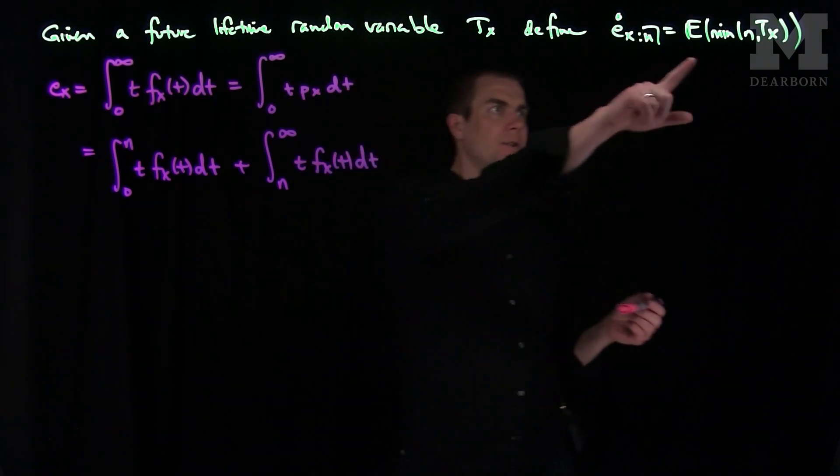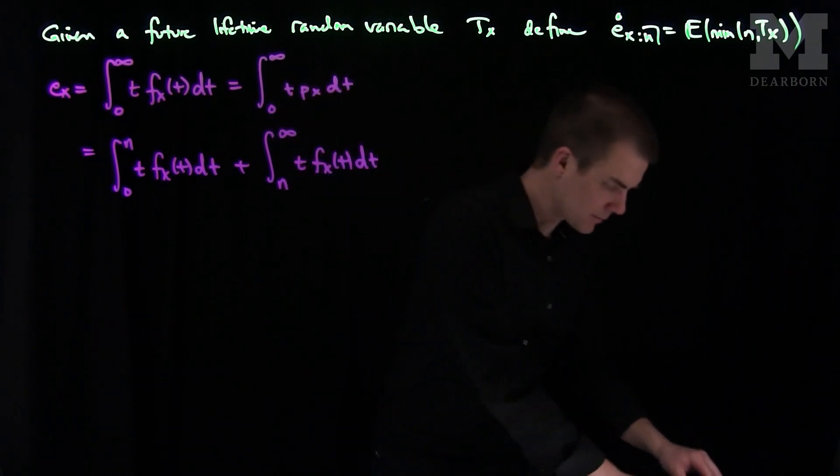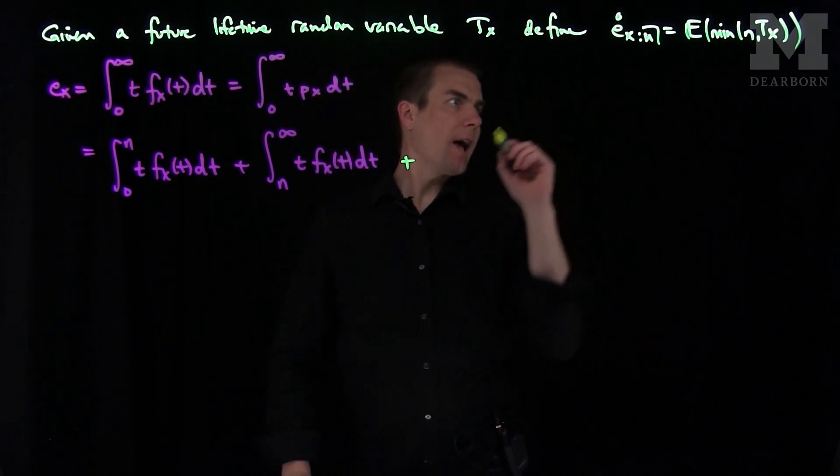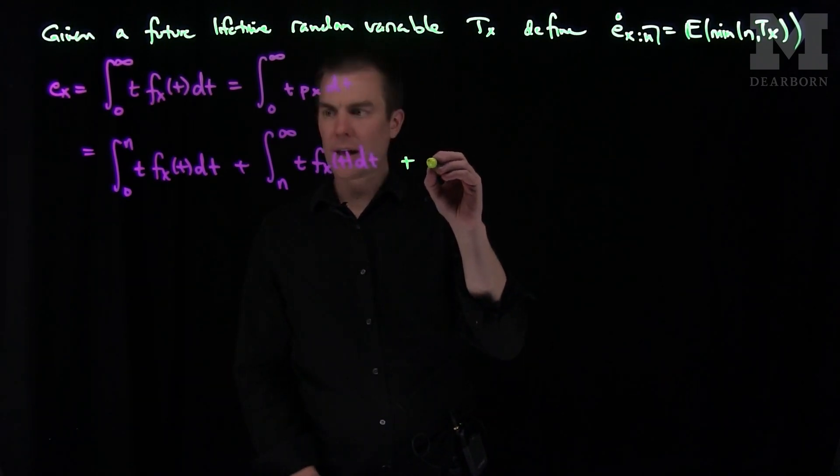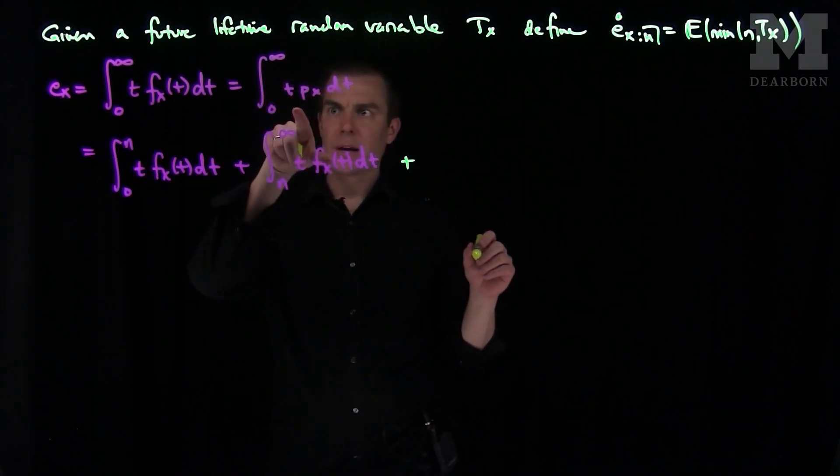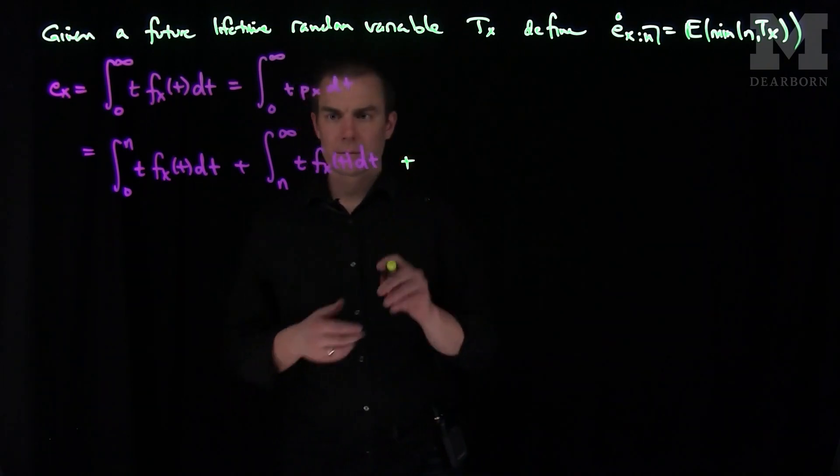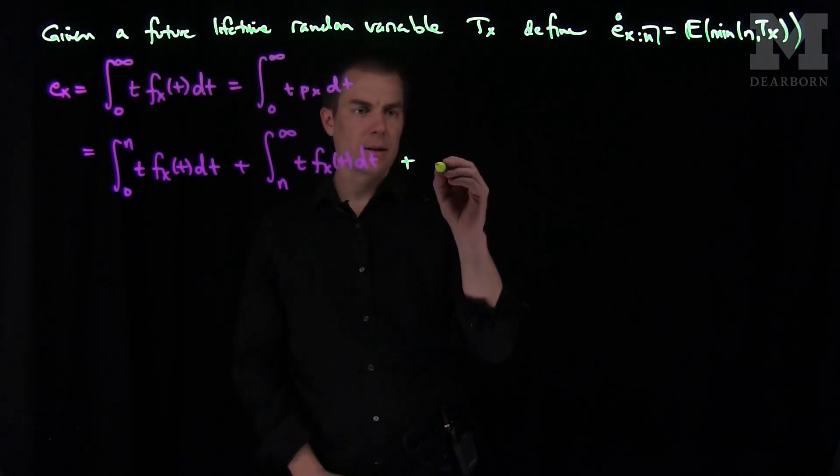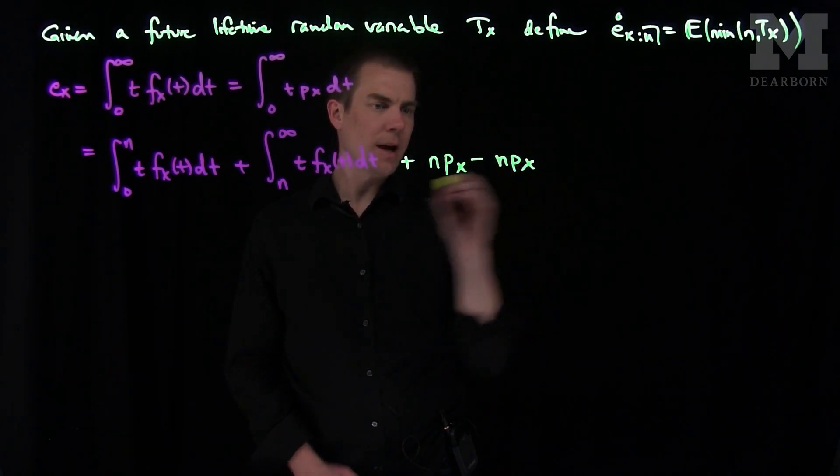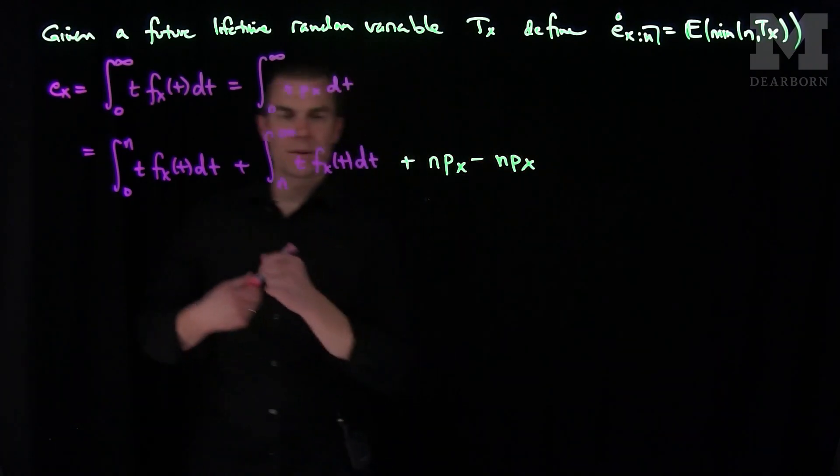And now we can compare. So what we have is I need to see an extra n. What we're missing is we're going to add and subtract. I'm missing an n times px, so I'm going to put an n. So what we'll do is we'll add in n px and subtract n px. That won't affect the problem at all.